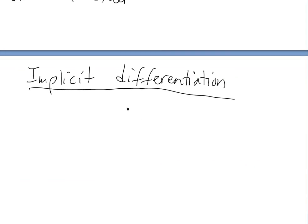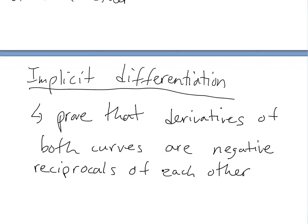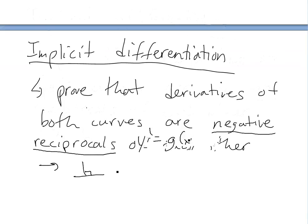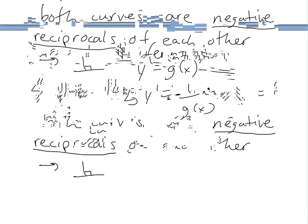We'll use implicit differentiation — see my other video on that. What we have to prove is that the derivatives of the two curves are negative reciprocals of each other. If y prime equals g(x), the negative reciprocal is negative one over g(x). You just flip it and put a negative in — and this proves the curves intersect at right angles.